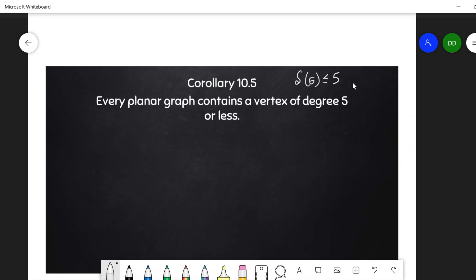So why is this? Well, suppose not. Then degree of v is greater than or equal to 6 for all vertices in the vertex set of g.